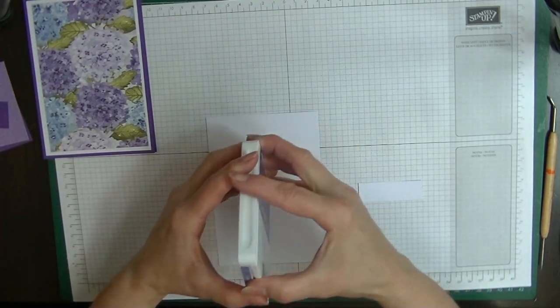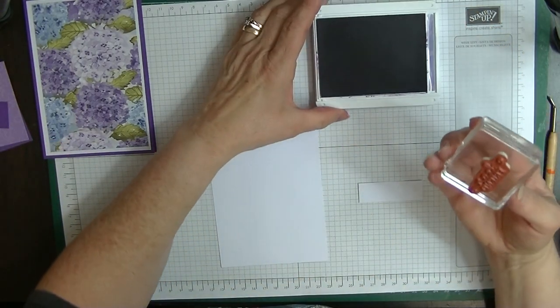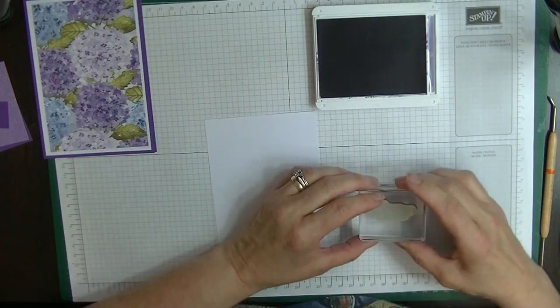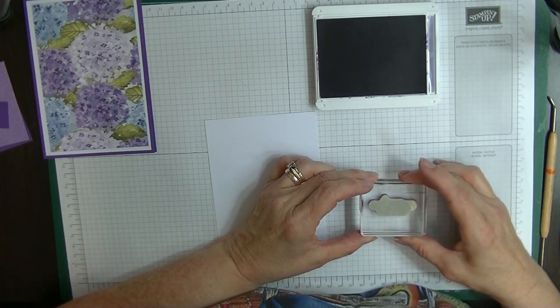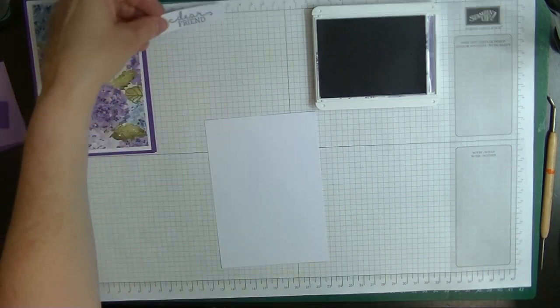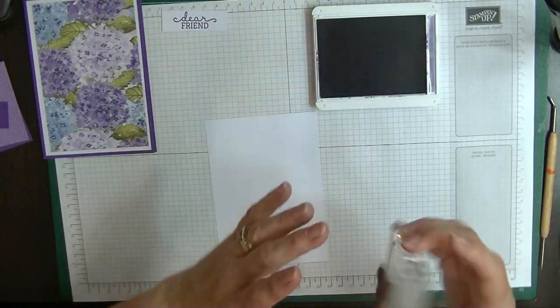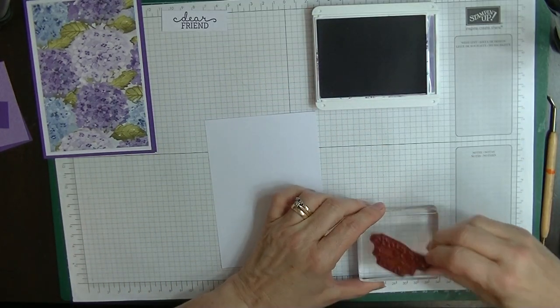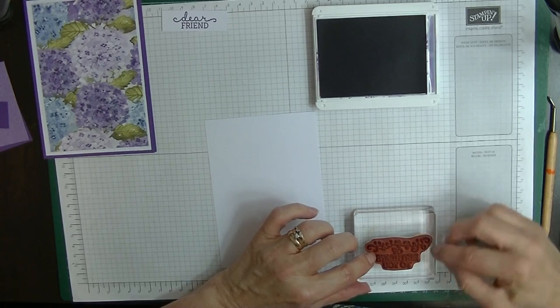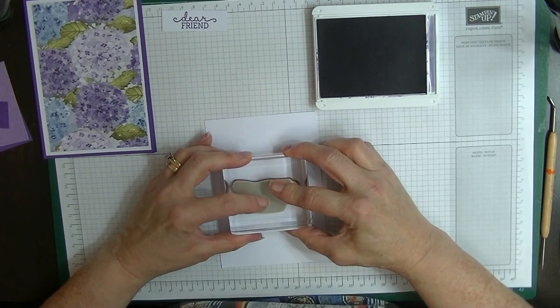I'm going to be using Gorgeous Grape for my dear friend. Excuse me if my head's in the way. There we go, that's done. For my other piece I'm going to use the Gorgeous Grape. I've got that on there really straight, haven't I? And this one just says happiest of birthdays to you.